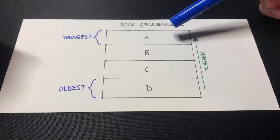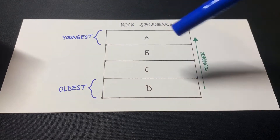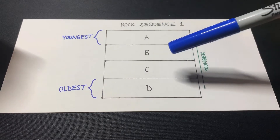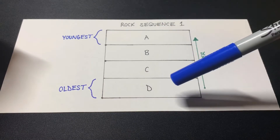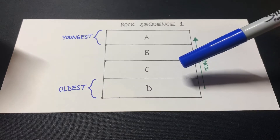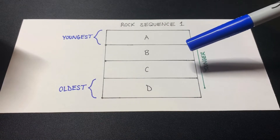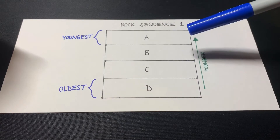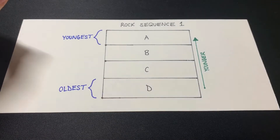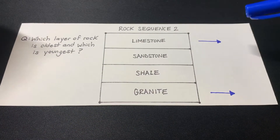So that means rock layer A is the youngest and rock layer D is the oldest. As you go upward, D is the oldest, C would be the second oldest, B would be the third oldest, and A would be the youngest. So I hope you guys have caught on by now.